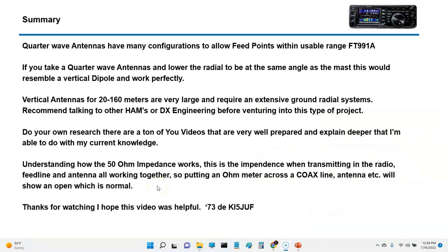So, to sum it up, quarter wave antennas have many configurations to allow various feed points within usable range of the 991A. If you take a quarter wave antenna and lower the radial to the same angle as the mast, this would represent a vertical dipole. And I think it would work perfectly. Do your own research. Tons of YouTube videos are well prepared and explained deeper than I'm able to with my current knowledge. And again, understand how 50 ohm impedance works. This is going to be a very critical part of your learning curve because feed line and antenna impedance is the magic to having good SWR. And understanding how those work in reactance and resistance and capacitance and inductance, all that's important. And I don't profess to be an expert, but I'm going to learn because I eventually am going to get my extra. So, that's my plan.